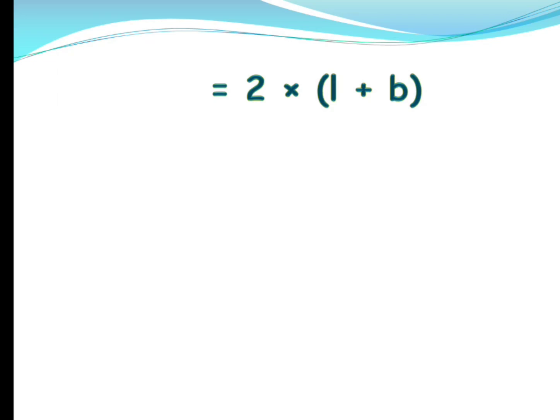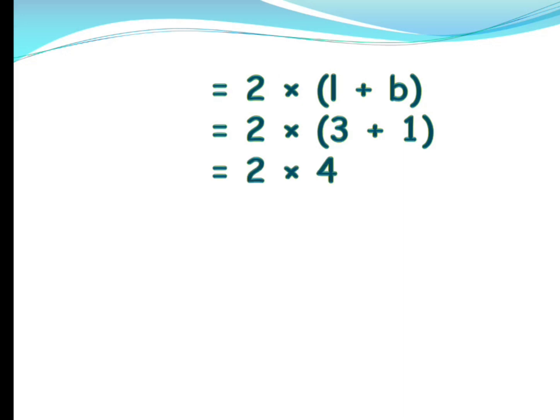Here L represents length and B represents breadth. You can write it as 'length' and 'breadth' in full, or simply L plus B. So 2 into (length plus breadth): the length is 3 kilometers and the breadth is 1 kilometer. You write 2 into (3 plus 1). Always do the addition first — 3 plus 1 gives us 4. Then 2 into 4: 2 fours are 8.